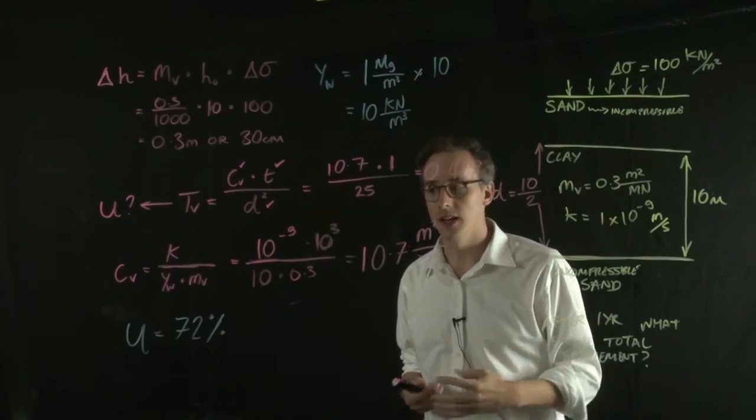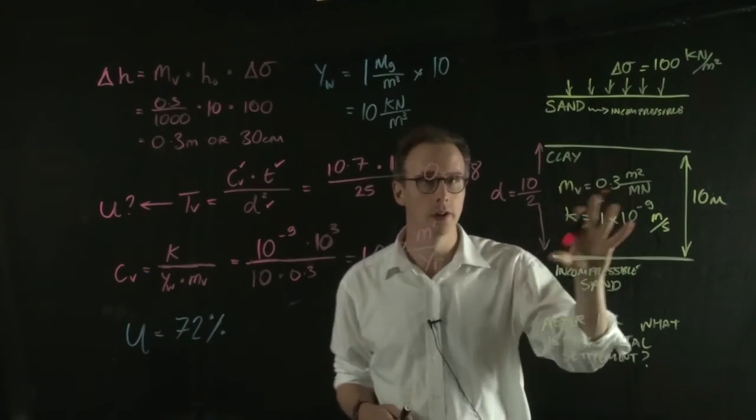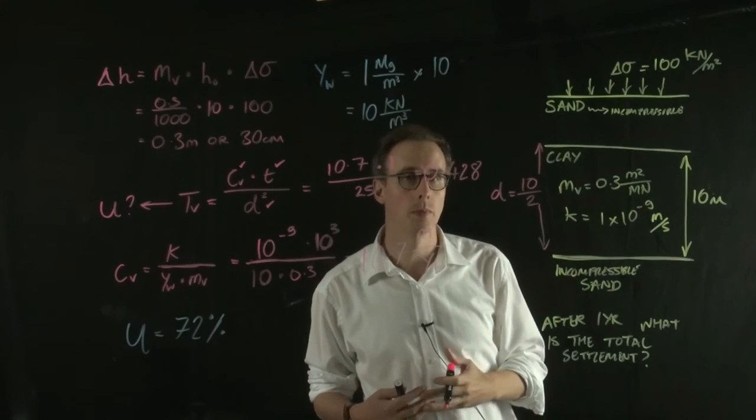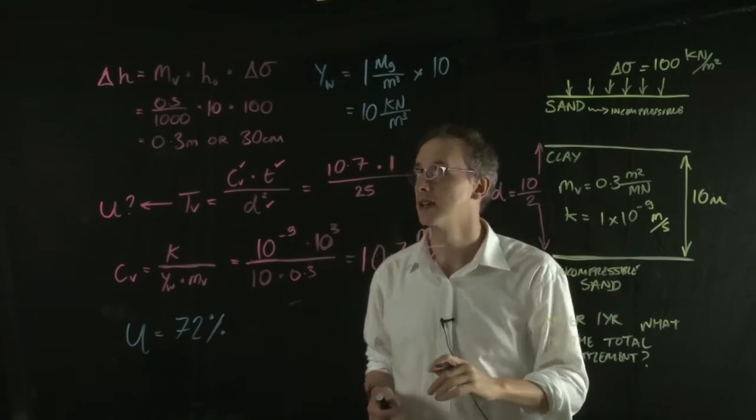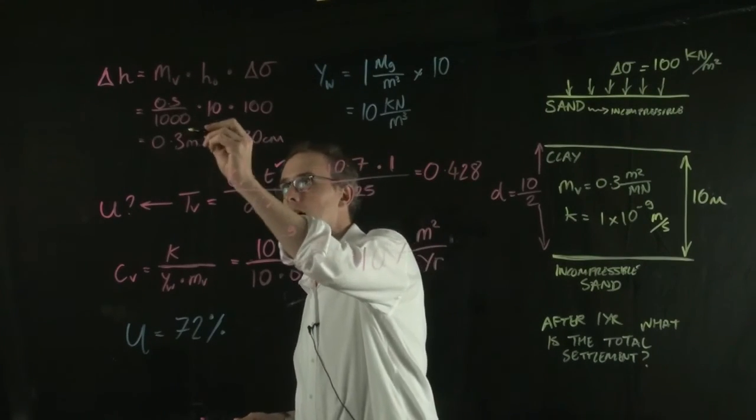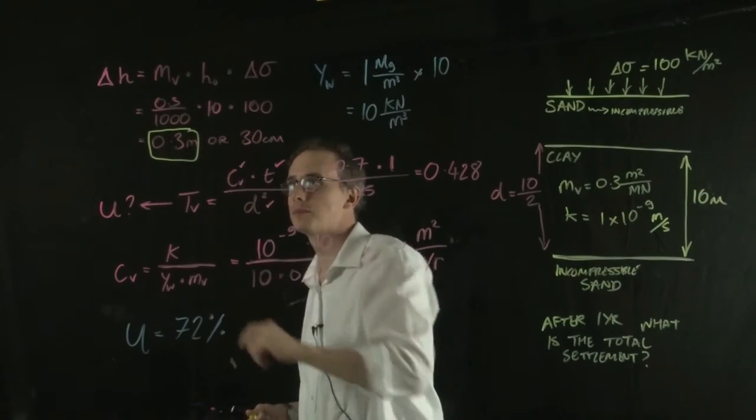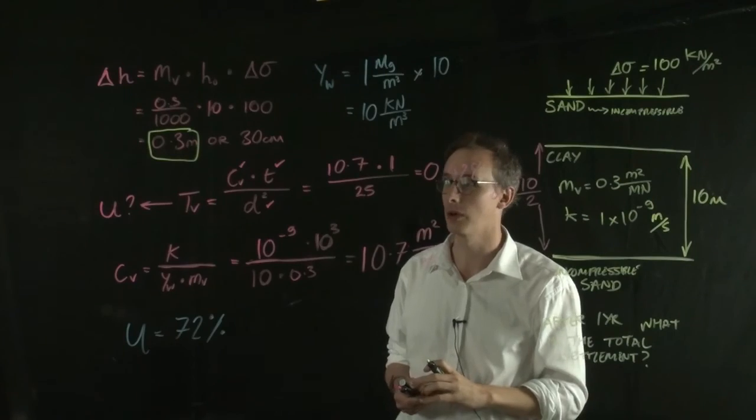So what that's saying really is that after one year, this soil has settled 72% of the total settlement has been reached. So the total settlement is this value here, 0.3 metres. So we know that 72% of that value has been reached after one year.